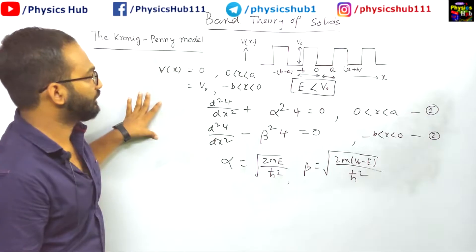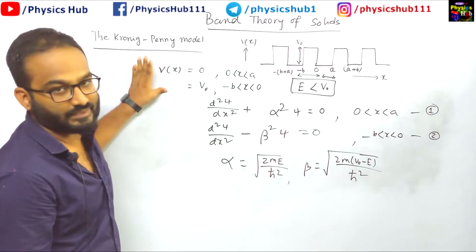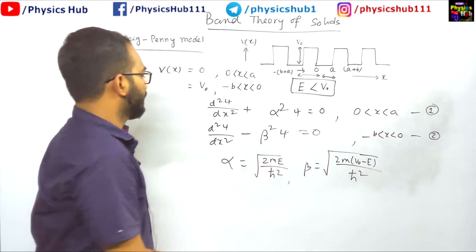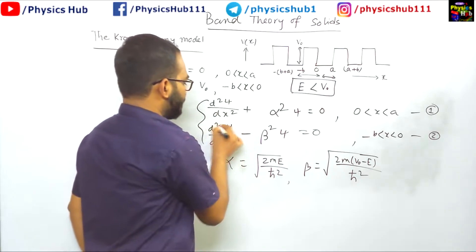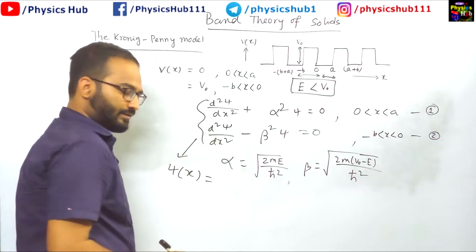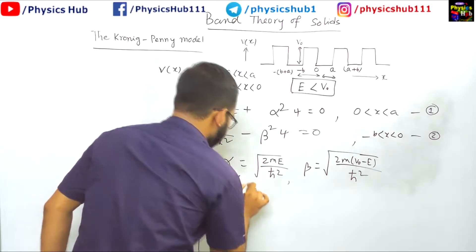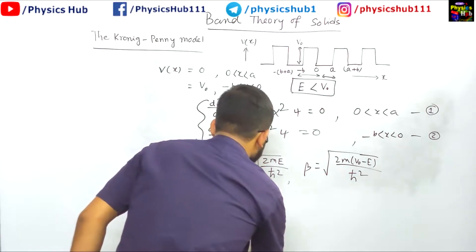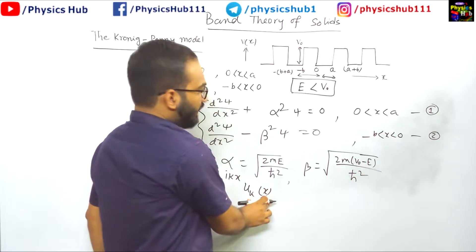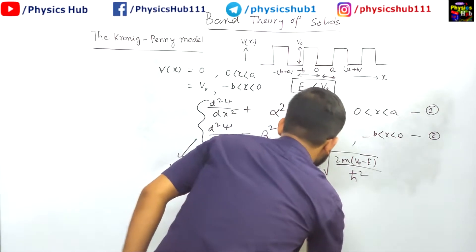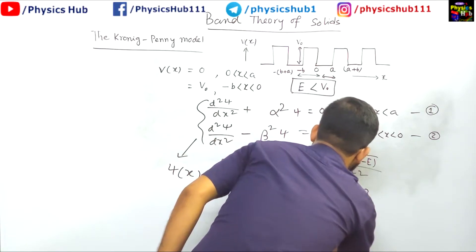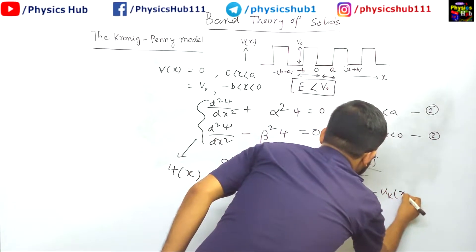Now as I have told you that this potential is periodic in nature, so you can directly apply the Bloch theorem to write its solution. So as per the Bloch theorem, the solution of this Schrödinger equation can be written in this form: ψ(x) = e^(ikx)u_k(x). Here this u_k(x) has the period of the potential means it should follow u_k(x + a + b) equals u_k(x).